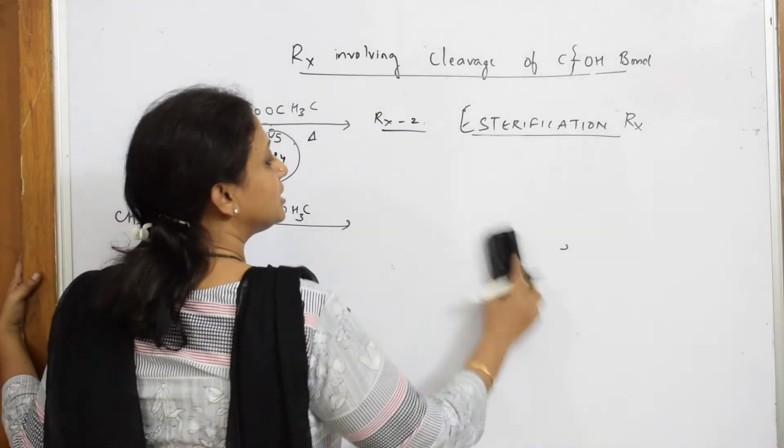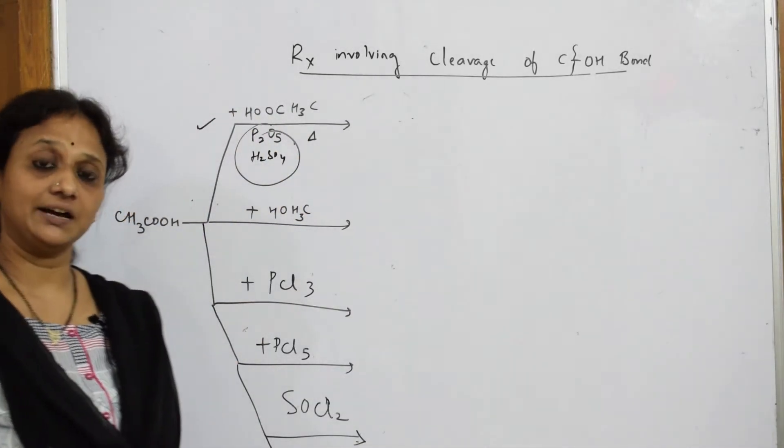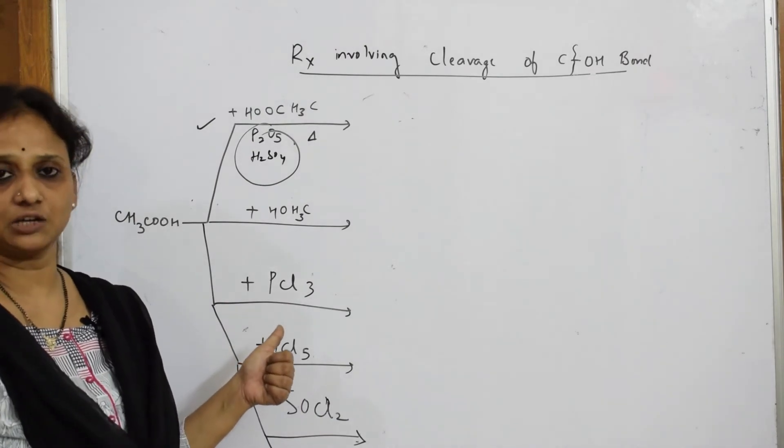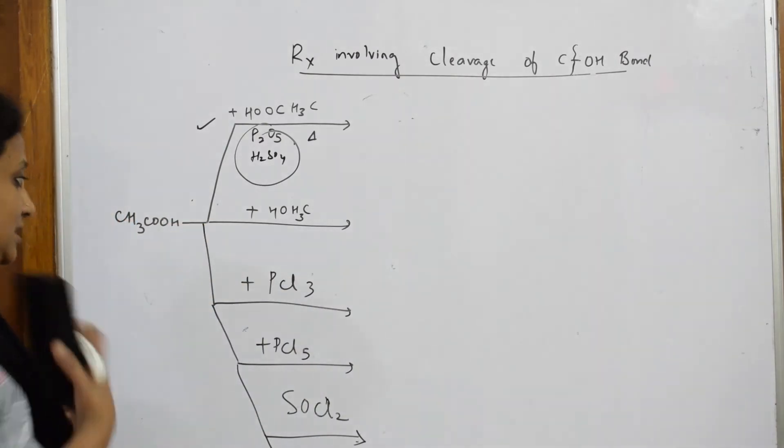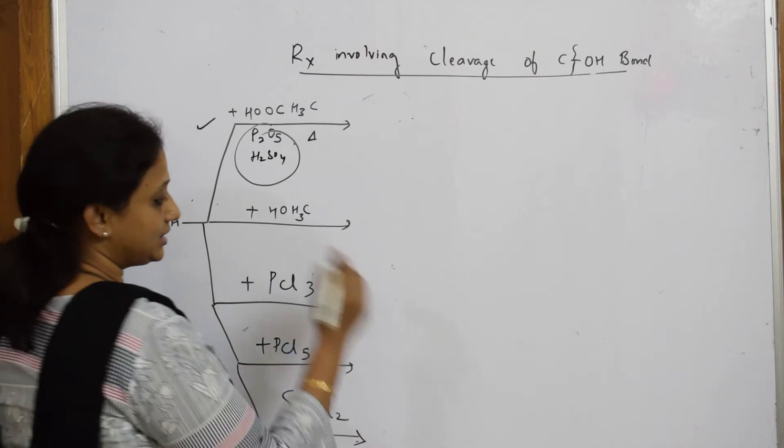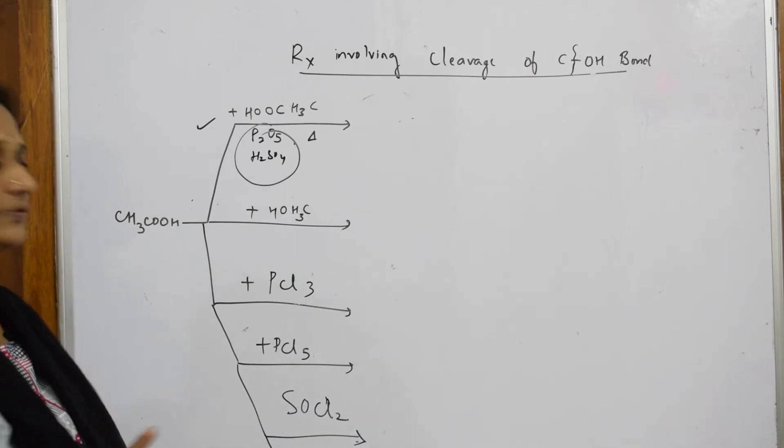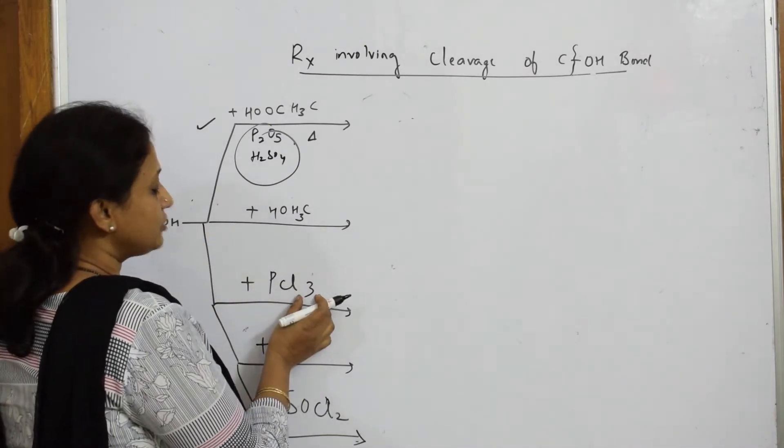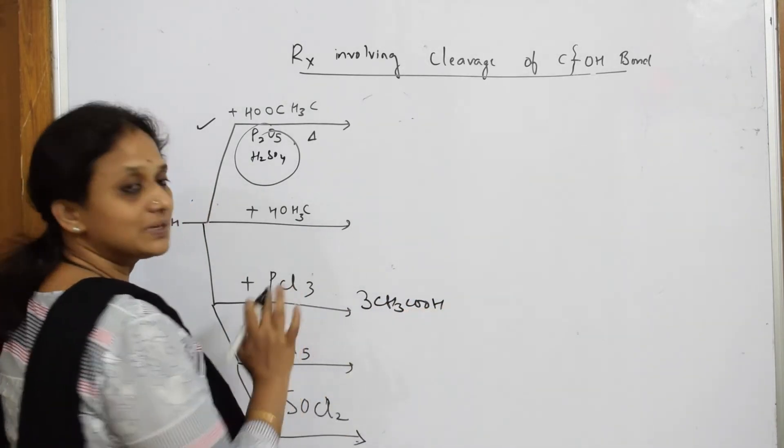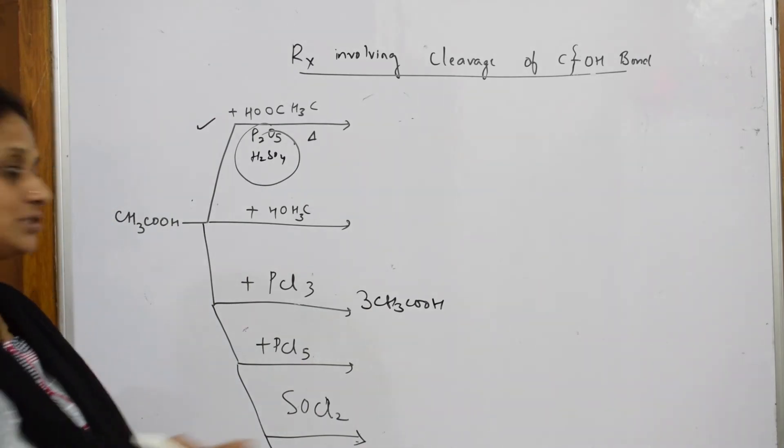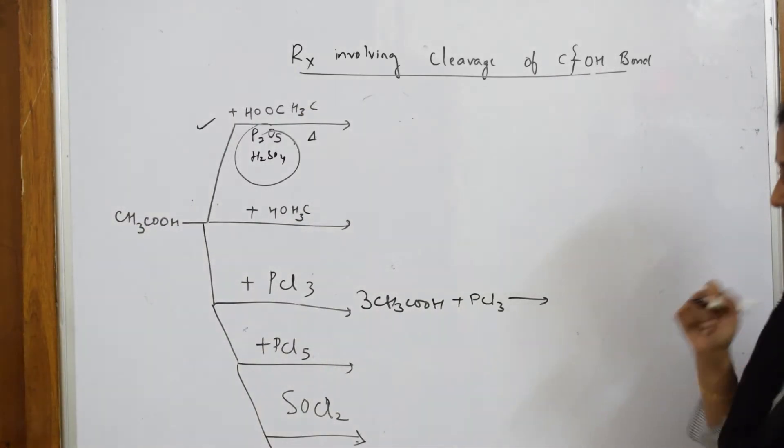Next category of reactions: we have been doing the same reaction in haloalkanes, haloalkenes, alcohols, phenols and ethers, and now in aldehydes, ketones and carboxylic acids. Whenever you are seeing PCl3, PCl5, or SOCl2 in the reaction, one important thing you have to remember. PCl3: try to take 3 moles of acetic acid because 3 hydroxyl groups should be replaced. That is nucleophilic substitution.